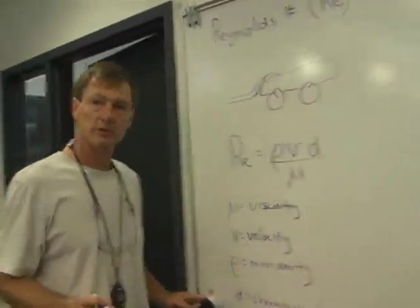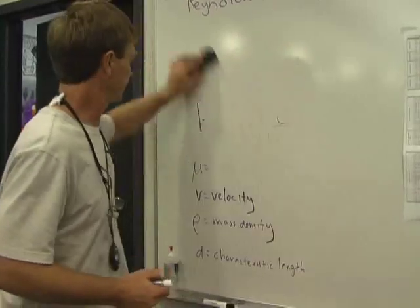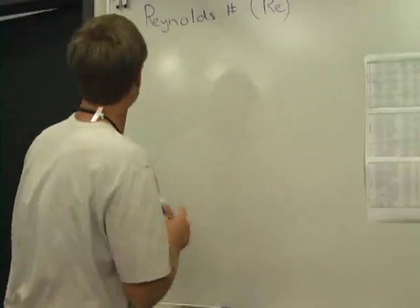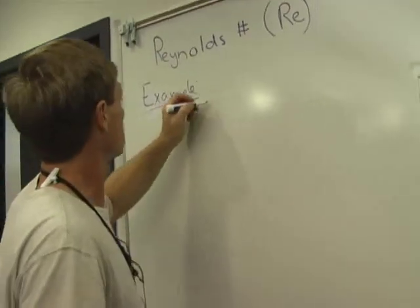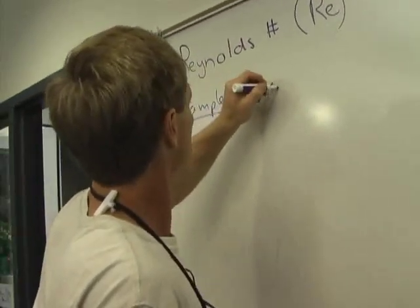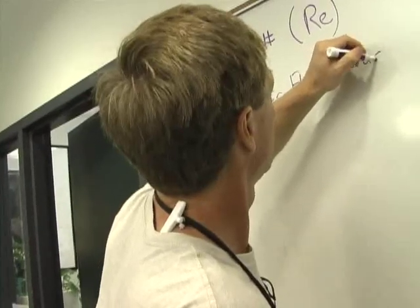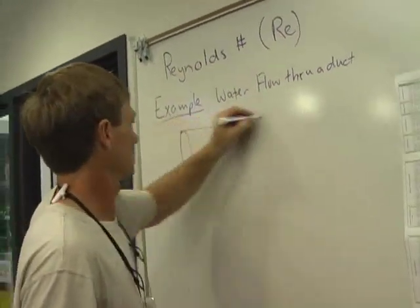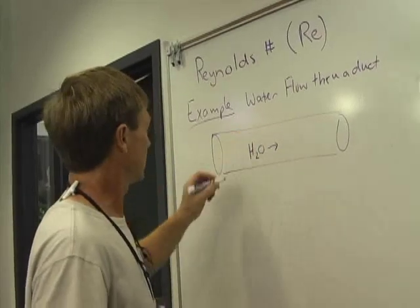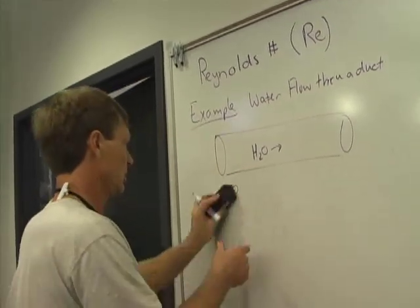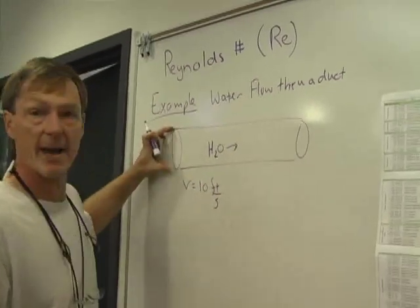And it depends on the different form. For an airplane wing, it's from the cord, from the front of the wing to the back. For a pipe, it's the diameter of the pipe. So let's do an example. We'll do water flow through a tube, through a duct. And let's say the speed of this stuff is H2O. Let's say the speed is 10 feet per second. And let's say the diameter is 2 feet.